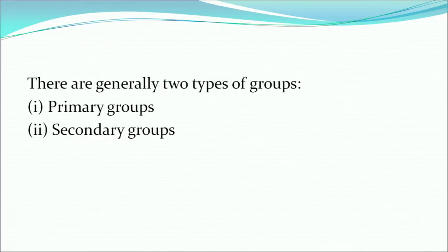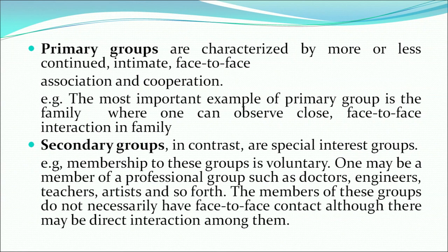Now let's see the types of groups. There are mostly two types: primary groups and secondary groups. Primary groups are generally characterized by more or less continued, intimate, face-to-face association and cooperation. The most common example of a primary group is the family, where one can observe close face-to-face interactions. Secondary groups, in contrast, are special interest groups where membership is voluntary — such as professional groups like doctors, engineers, teachers, and artists. Members of these groups do not necessarily have face-to-face interaction, although there may be direct interactions among them.